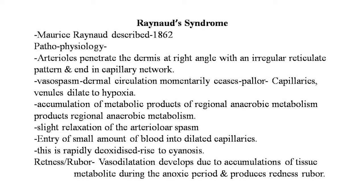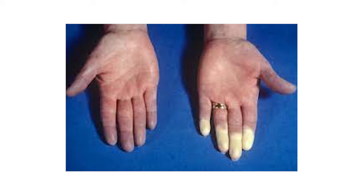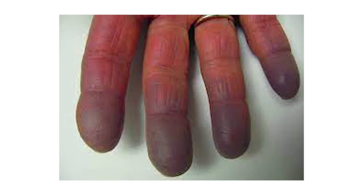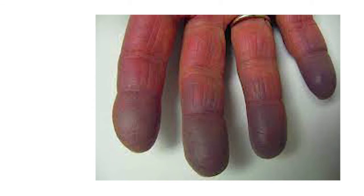There is slight relaxation of the arterial spasm, allowing entry of a small amount of blood into the dilated capillaries, which is rapidly deoxygenated. This gives rise to cyanosis. Redness or rubor develops due to accumulation of tissue metabolites during the anoxic period. On screen, images clearly show fingers with pallor from vasospasm and the dorsal side showing bluish fingertips from cyanosis.